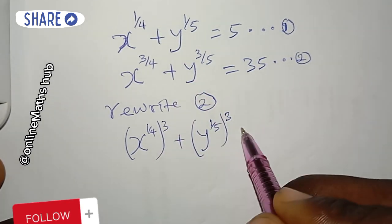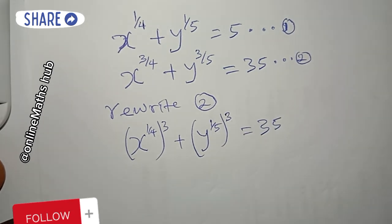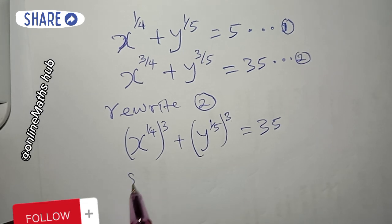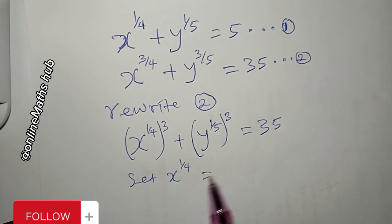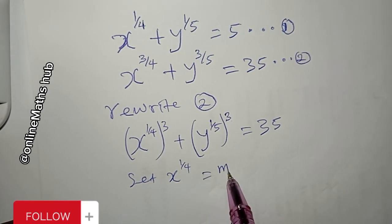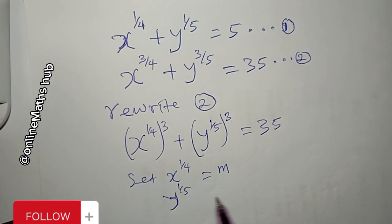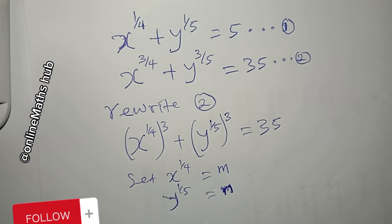Next, I'm going to set x^(1/4) equal to m and y^(1/5) equal to n. This substitution will make the work more convenient to solve.